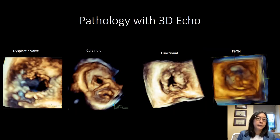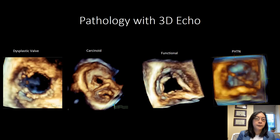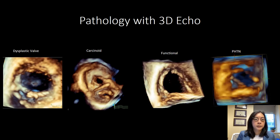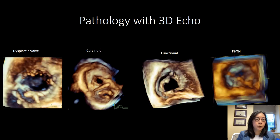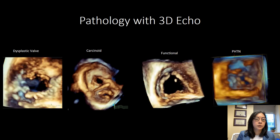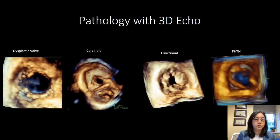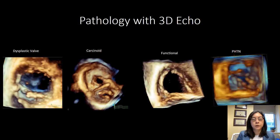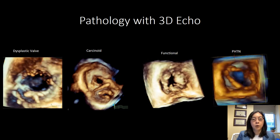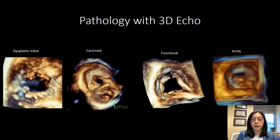Beyond identifying leaflet morphology, you can actually identify pathology with 3D echocardiography. Going from left to right, there's an example of a dysplastic valve with abnormal chordae, a patient with both mitral and tricuspid carcinoid syndrome showing thickened restricted tricuspid valve leaflets, a patient with functional tricuspid regurgitation where the leaflets are highly mobile but do not coapt in the center because of RV dilatation, and a patient with pulmonary hypertension.